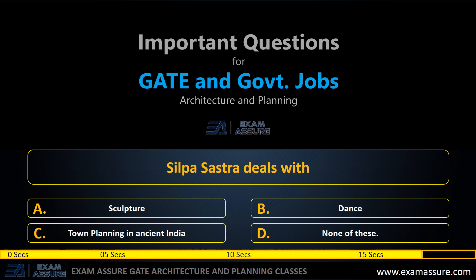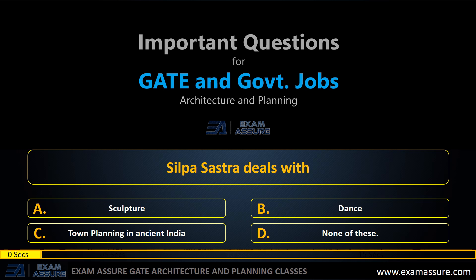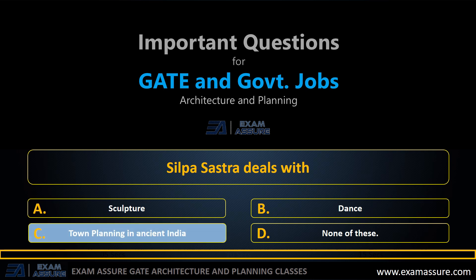Next question. Silpa Shastra deals with — Option A: Sculpture. Option B: Dance. Option C: Town planning in ancient India. Option D: None of these. The correct answer is Option C: Town planning in ancient India.